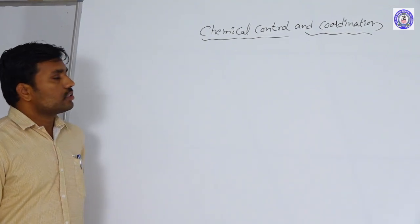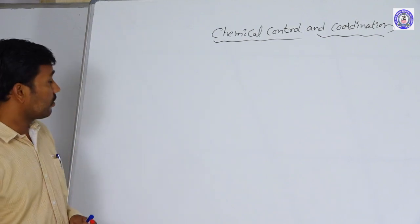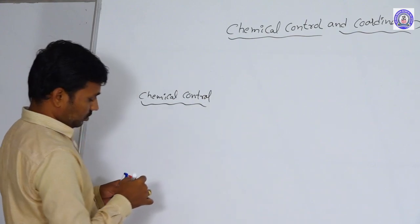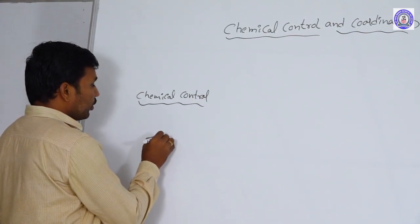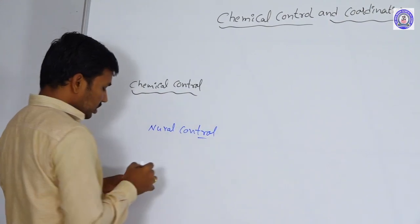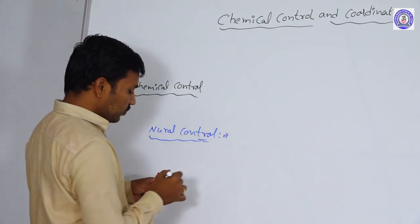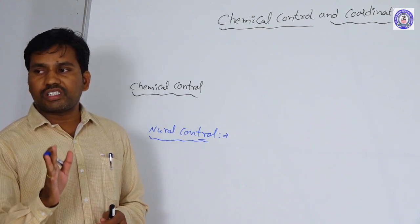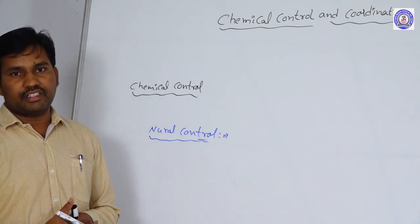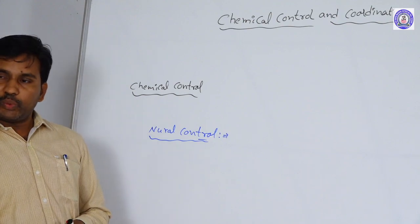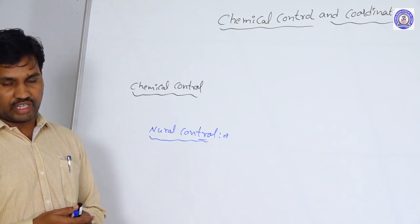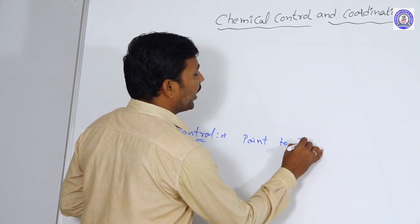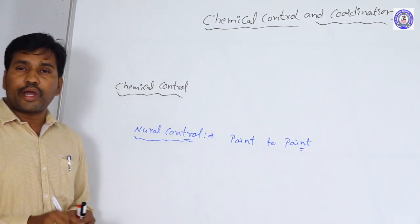Good morning. Today we are going to discuss the next topic: chemical control and coordination. We have already discussed neural control and coordination — how neurons and nerves coordinate body functions, and how all processes of the organism are majorly controlled by the neural system. Neural control is a point-to-point coordination system.